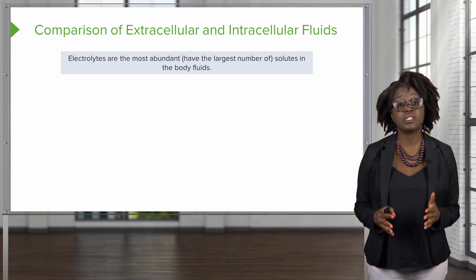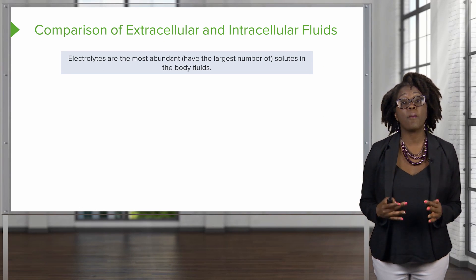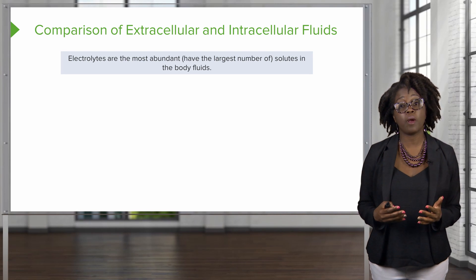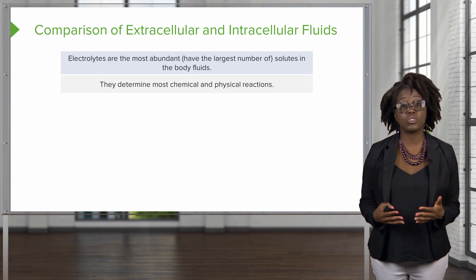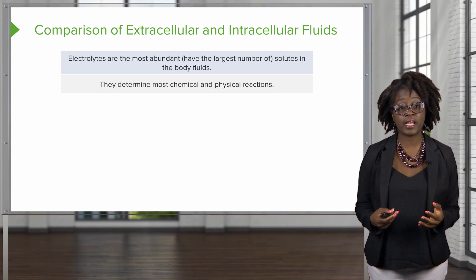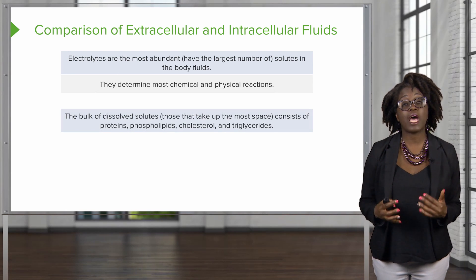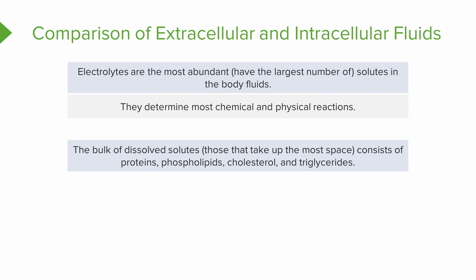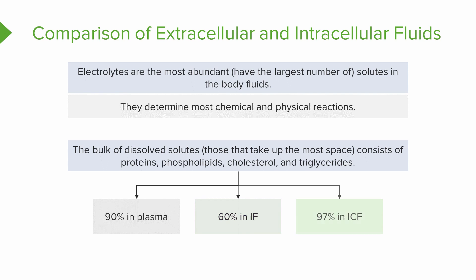When it comes to numbers, electrolytes are going to be our most abundant solute in our body's fluids and are going to determine most of our chemical and physical reactions. However, when it comes to how much space they take up, the bulk of our dissolved solutes are going to be proteins, phospholipids, cholesterols, and triglycerides. These are going to take up about 90% of our plasma, 60% of our interstitial fluid, and 97% of our intracellular fluid.